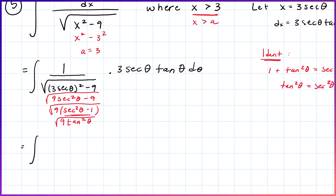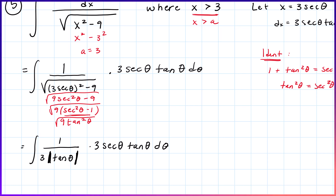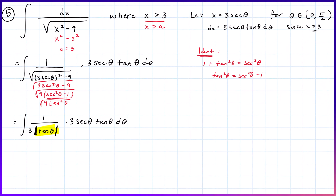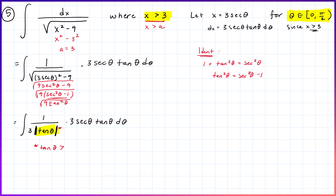So under the square root we have 9 tan²θ, giving us 3|tan θ| in the denominator. Now, since theta is restricted between 0 and pi over 2, the tangent is non-negative on that interval, so we can drop the absolute value. The integral then becomes 1 over (3 tan θ) times 3 sec(θ) tan(θ) dθ.